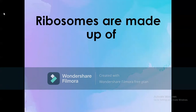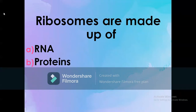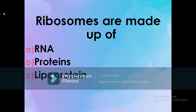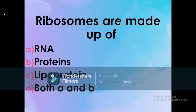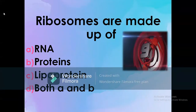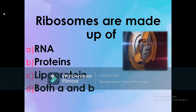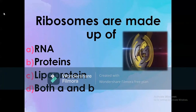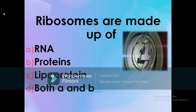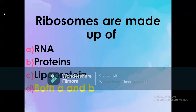Ribosomes are made up of: A) RNA, B) Proteins, C) Lipoprotein, D) Both A and B. The correct option is D: Both A and B. Ribosomes are made up of RNA and proteins.